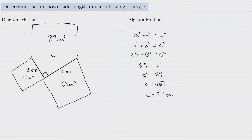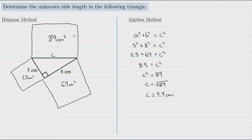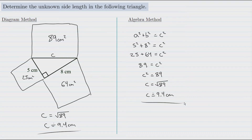That's the area of the square, but remember we need to find the length of side c. So we can figure that out by finding what number times itself works out to 89. We need to find the square root of 89, so c equals the square root of 89, which equals approximately 9.4 centimeters. Two ways to find the unknown hypotenuse in a right triangle.